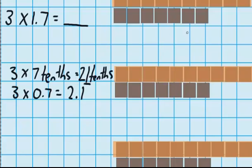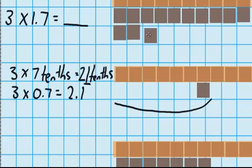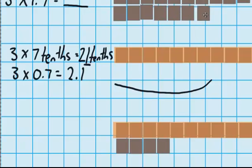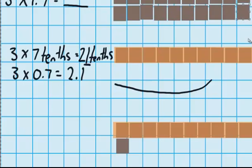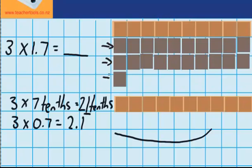Now we can check that answer by moving all our tenths together. I'm going to move all of these tenths up here. Just by moving those three up, I've made another whole chocolate bar, and I'm moving these ones up as well. Then I'm going to go down to my bottom group and move those tenths up too. You can see I've made another whole chocolate bar. So three groups of 7 tenths is the same as 2.1 — one whole, two wholes, and there's that 1 tenth. So we were right.